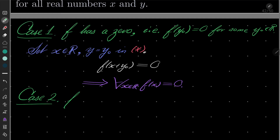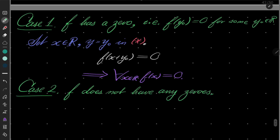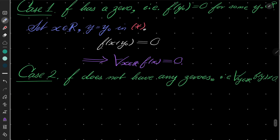Case number two: f does not have any zeros, i.e., for every real number y, f(y) is non-zero. And then the funny part: let's change y to y plus z in our condition asterisk.